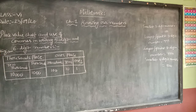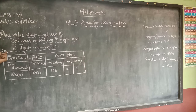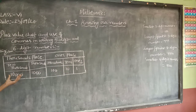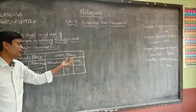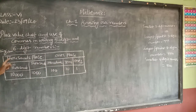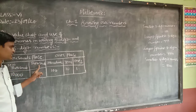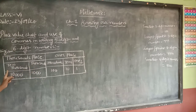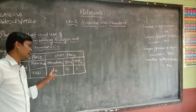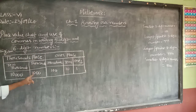So for a five-digit number, there is the ones place consisting of ones, tens, and hundreds; and the thousands place consisting of thousands and ten-thousands. So the five places are: ones, tens, hundreds, thousands, and ten-thousands.